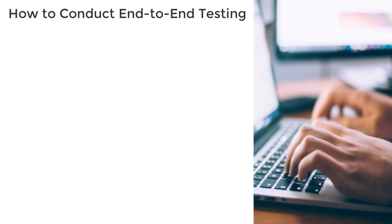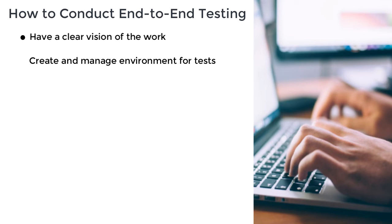Here are some steps to conduct a successful end-to-end testing process. Firstly, have a clear vision of your work. Have an obvious picture of how every aspect of the system should work and proceed accordingly. If something doesn't work, you can fix it immediately.